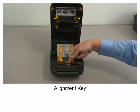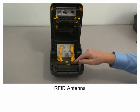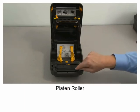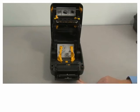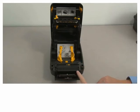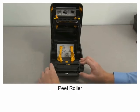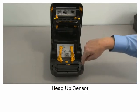Alignment key, RFID antenna, flatten roller, label dispenser peel bar, label taken sensor, peel roller, and head up sensor.